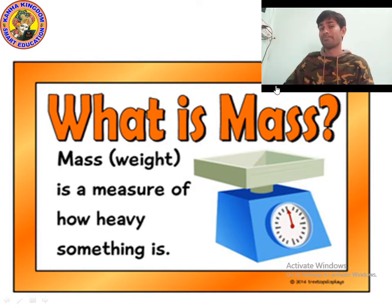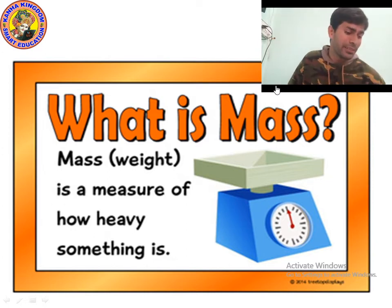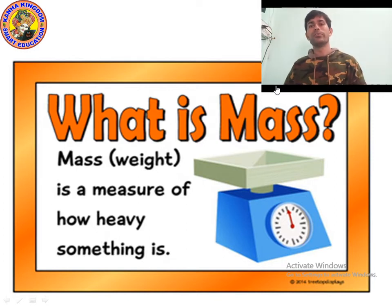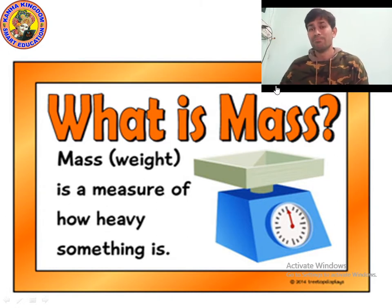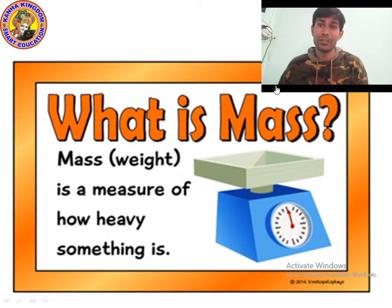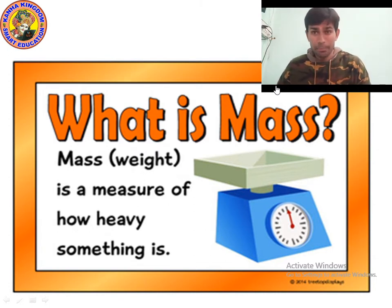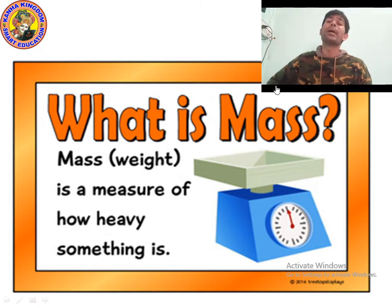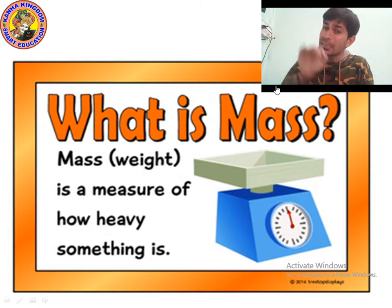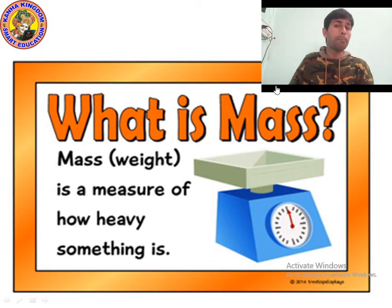Weight is a different thing — you will study it in higher classes. Weight is calculated by multiplying mass by 9.81. On Earth, we treat mass and weight as the same, but actually they are different. My mass is 50 kilograms — it is wrong to say my weight is 50 kilograms, because mass is measured in kilograms.